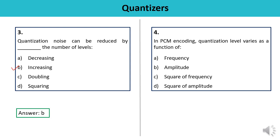Question 4: In PCM encoding, quantization level varies as a function of — frequency, amplitude, square of frequency, or square of amplitude? In linear PCM the quantization levels are uniform. But in normal PCM encoding, the quantization levels may vary according to the amplitude, which is based on A-law or mu-law. The correct answer is B.